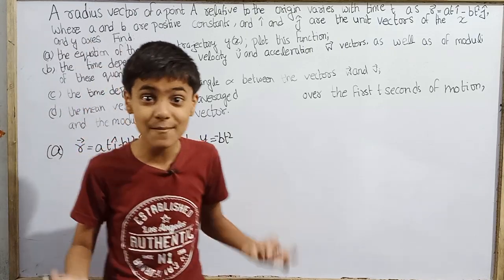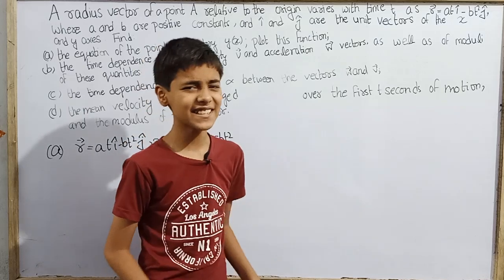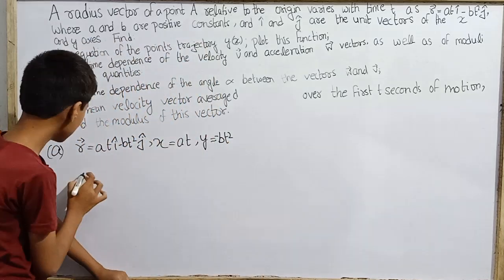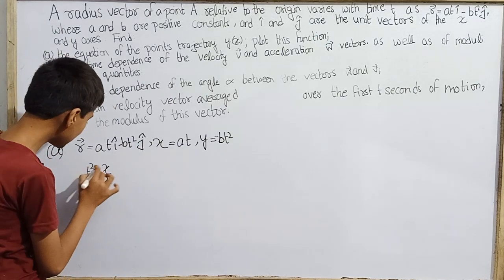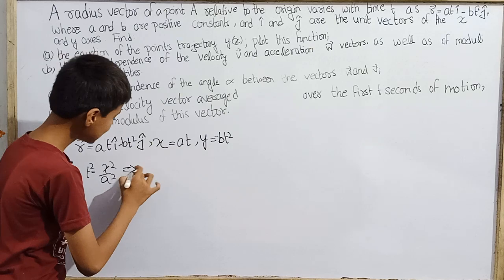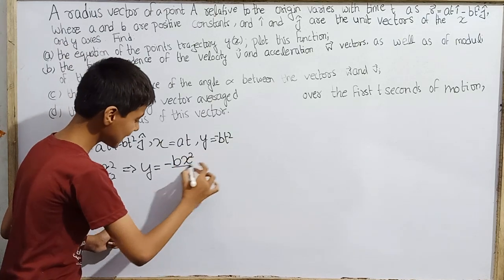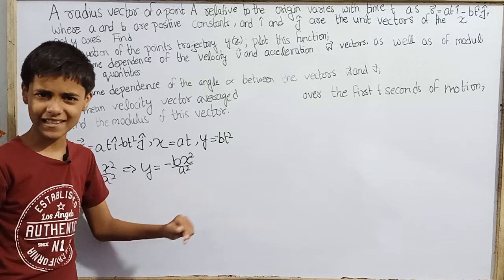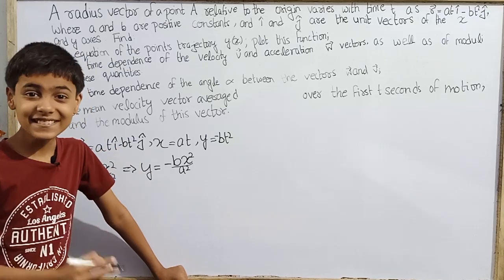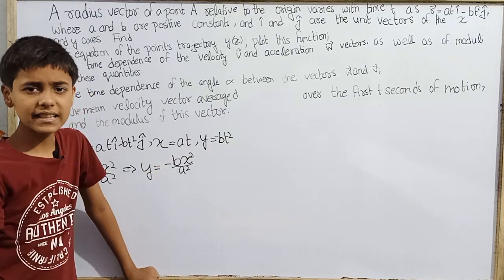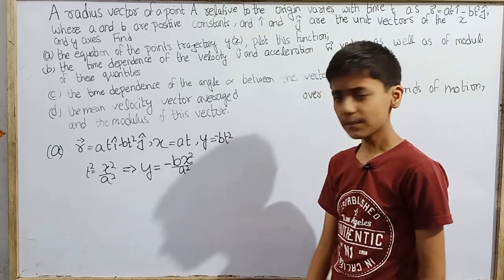The trajectory means the mathematical relationship between y and x. From x equals a·t, we get t equals x/a. Substituting into y equals minus b·t² gives y equals minus b·x²/a². This is the trajectory equation, which can also be written as y equals minus (b/a²)·x².